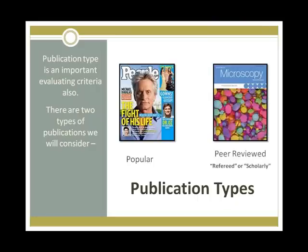Scholarly journals usually contain much longer articles, are written by authorities in their respected field, have footnotes and bibliographies, and are reviewed by an editorial board. These are better sources for doing your research. Some examples are the Journal of the American Medical Association, Registered Nurse, and American Journal of Nursing.